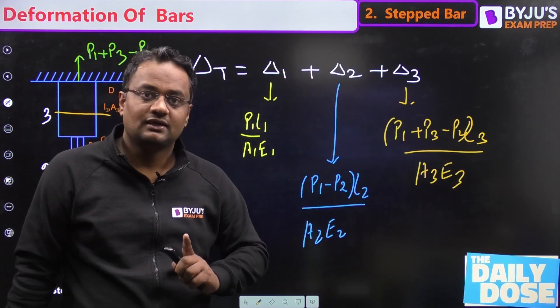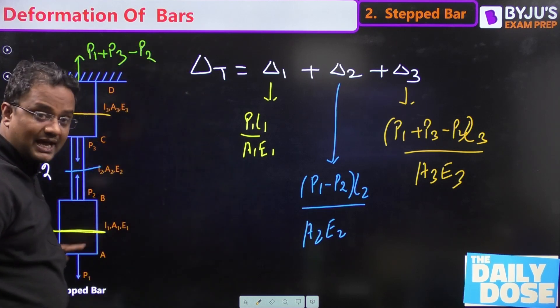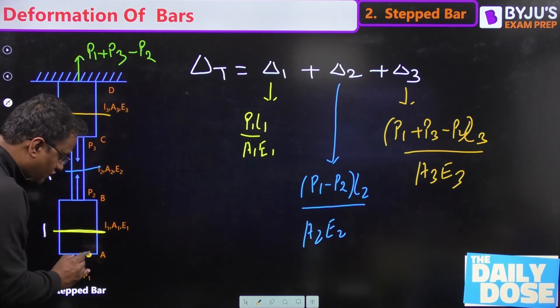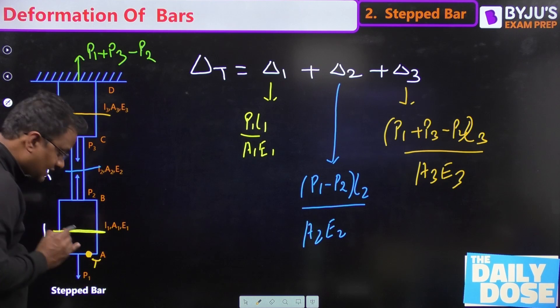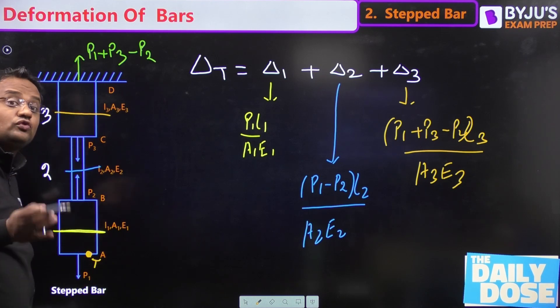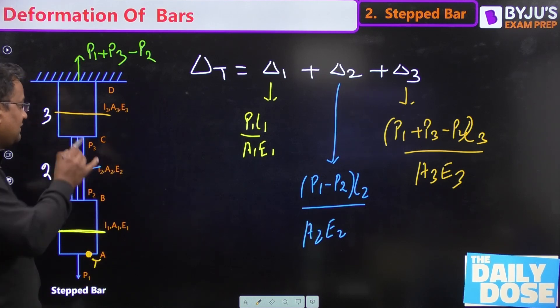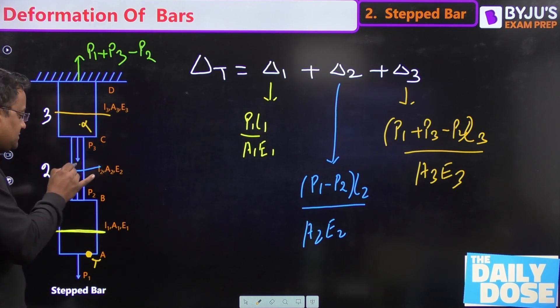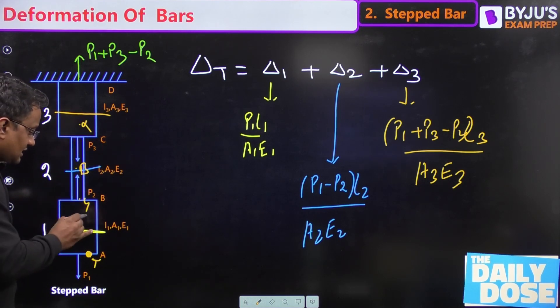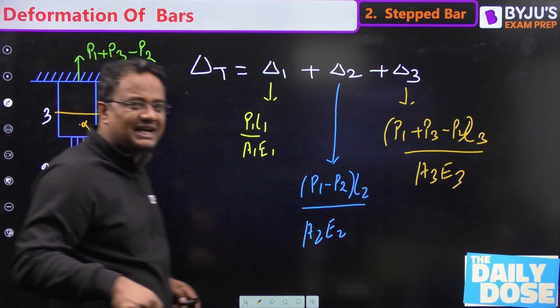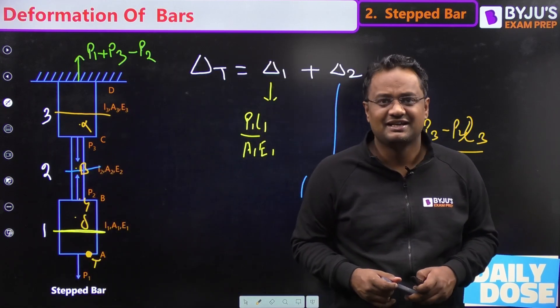Now guys, this is the deformation of total bar or the movement or the displacement of this point T. Can you tell me how to find the displacement of any other point? Maybe here alpha, this alpha point displacement, this beta, this gamma, this delta. Please let me know on the comment section and thank you guys, take care.